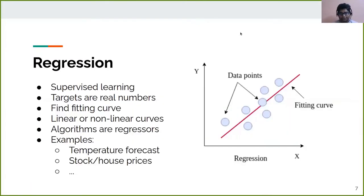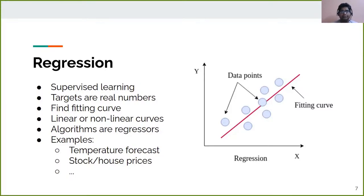We will learn about regression. As we learned previously, regression is also a kind of supervised learning technique because it also has targets. The only difference with classification is that here the targets are real numbers. On the right, we can see a straight line fitting through all the blue circles, which are the targets. This line may also be a curve in real life. To find these nonlinear or linear curves, there are separate algorithms offered for regression. The algorithms used for regression tasks are called regressors.